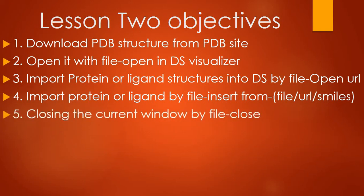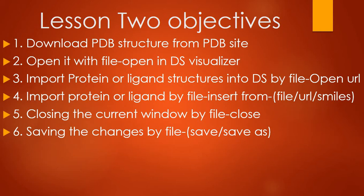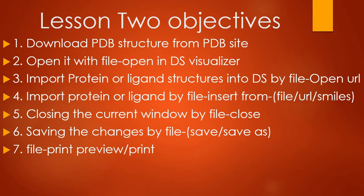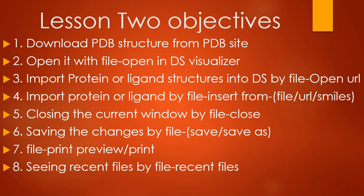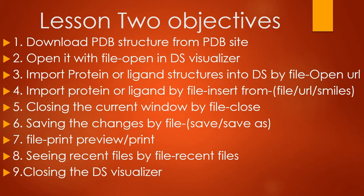Then we will learn how to close the currently opened window by going to File menu and selecting the Close option. Our sixth objective is saving the changes you made in your structure by going to File and clicking on the Save or Save As option. Our seventh objective is going to File menu and seeing the print preview or printing the image of the current window. Our eighth objective is to see the recently opened files by going to File and selecting the Recent File option.